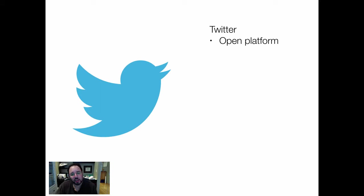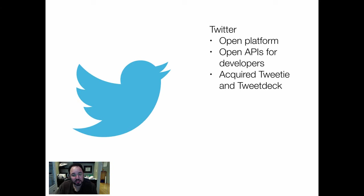Consider Twitter. Twitter initially ran a very open platform with all sorts of open APIs for developers. Everybody could link to it, and it was very successful at that. But about a year ago, it started to do something different: it acquired some of those developers — makers of Tweetie and TweetDeck as two examples — and put out its own apps. Then, a little bit later, it moved to limit the API calls on Twitter.